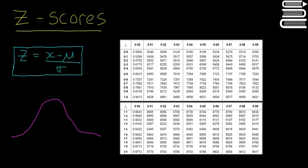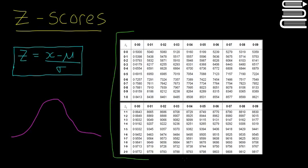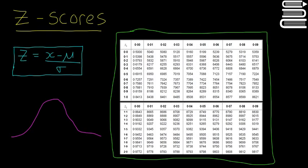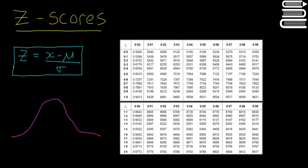We know about our standard normal distribution — we have 0, 1, minus 1, etc. You might have seen these before: these are the standard normal tables. Basically what these do is they calculate the area below certain points on the standard normal distribution.